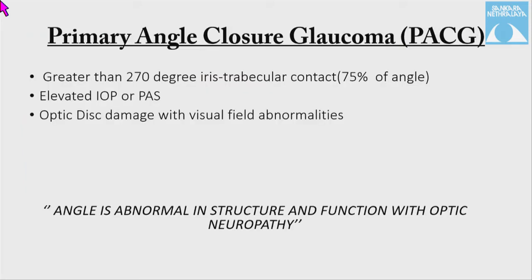In primary angle closure glaucoma, there is greater than 270 degrees of iridotrabecular contact with elevated intraocular pressure and peripheral anterior synechia, with associated optic disc damage corresponding to visual field abnormalities. At this stage, the angle is abnormal in structure and function, with associated optic neuropathy.